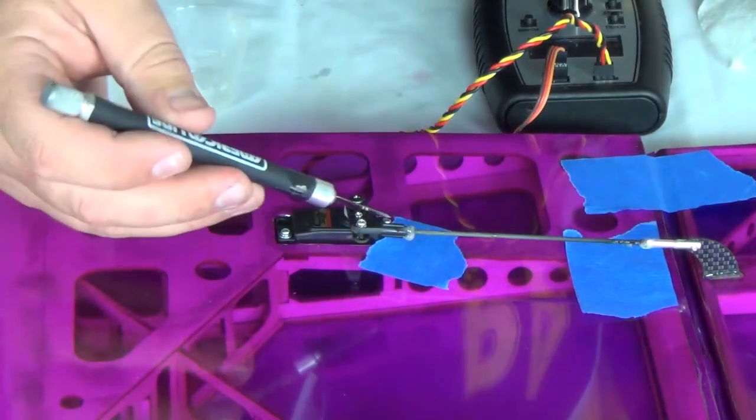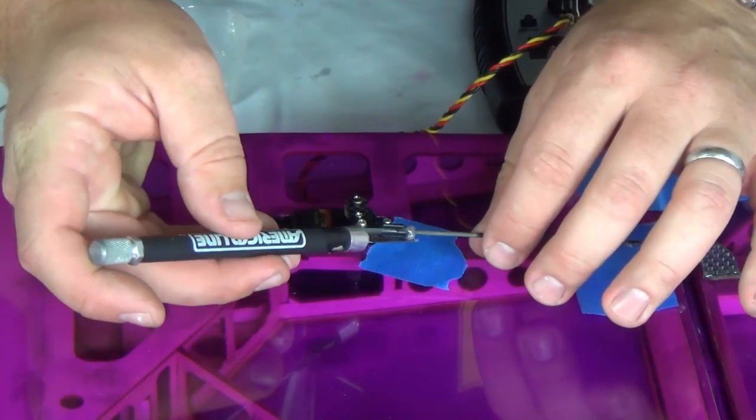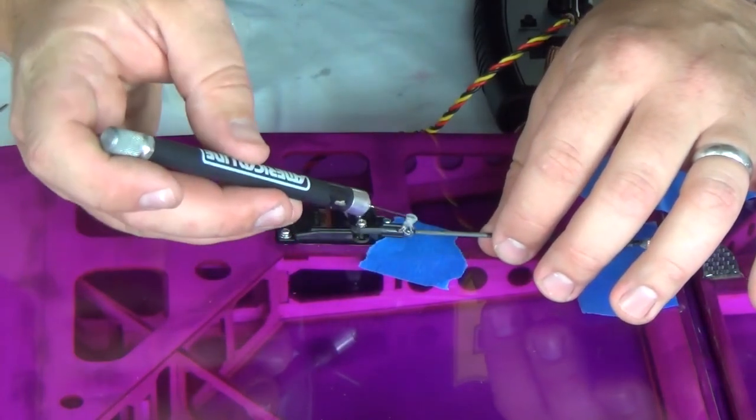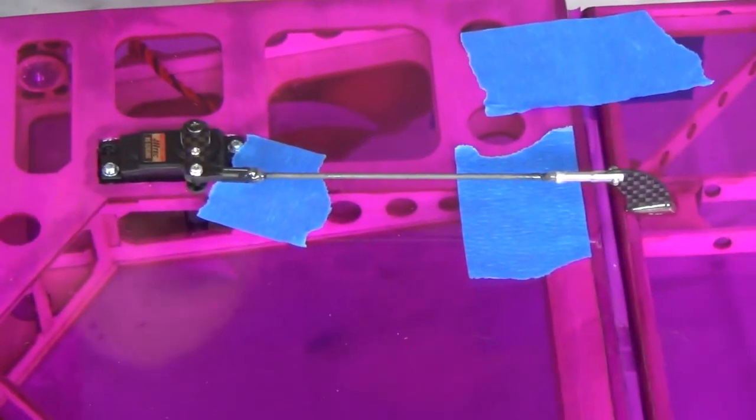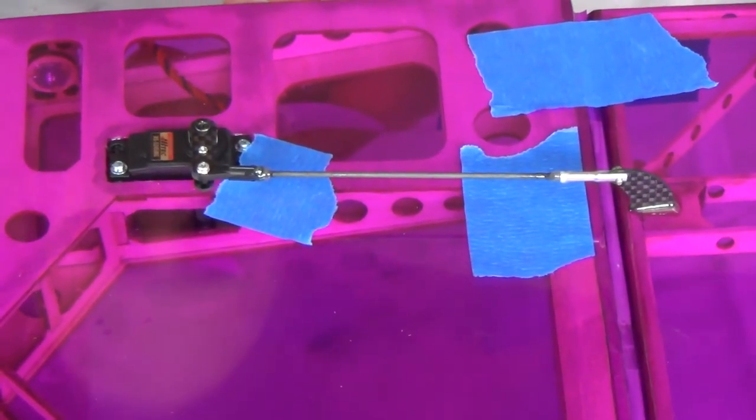Once it begins to stiffen up, however, set the wing aside and make sure that everything is centered, then let it completely cure. You've just made a super strong and ultra precise lightweight linkage that should require minimum trimming if any.